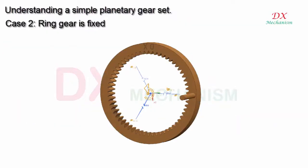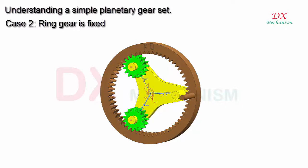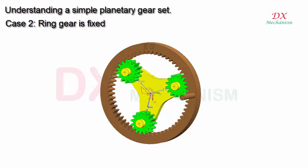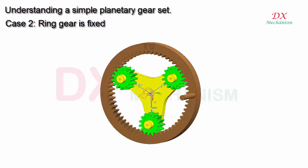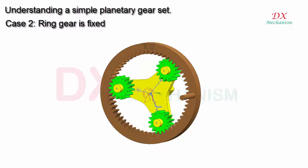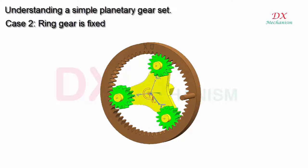Case 2: the ring gear is fixed. When the carrier rotates around itself, the planet gear will have two transmissions: rotation around its own axis and rotation around the center axis of the carrier.